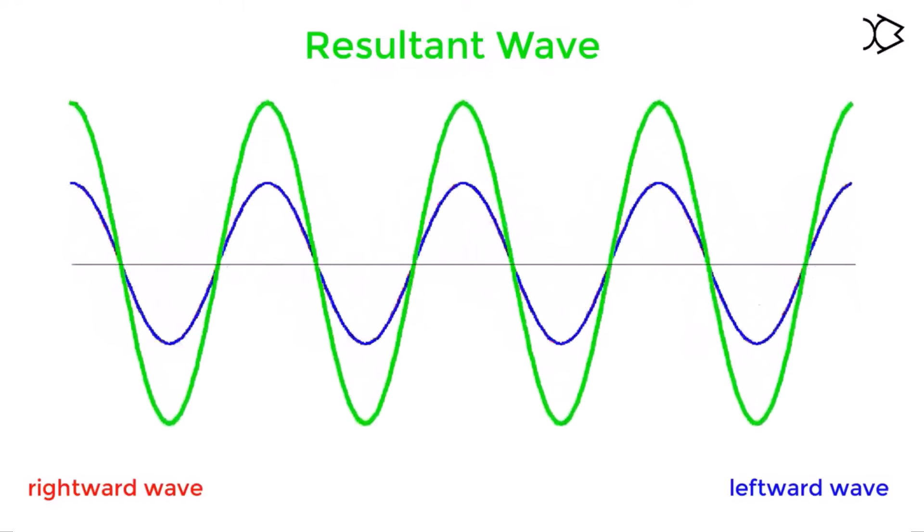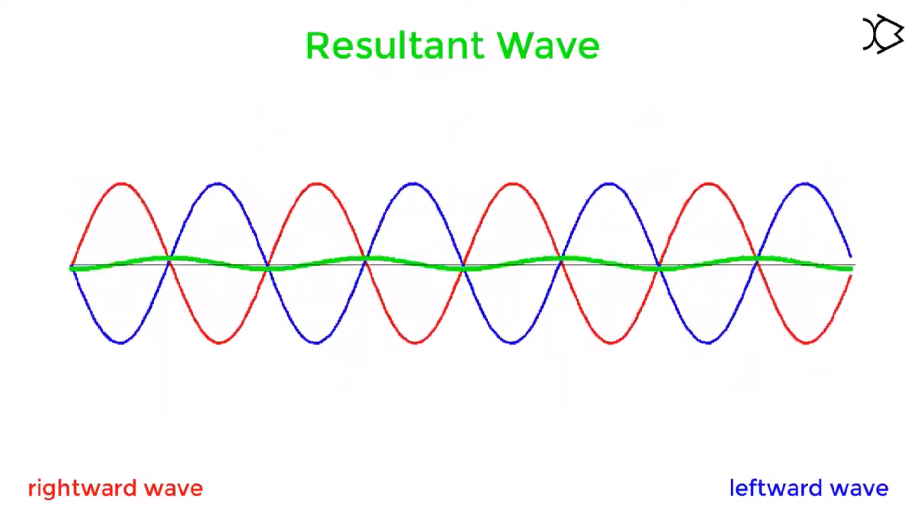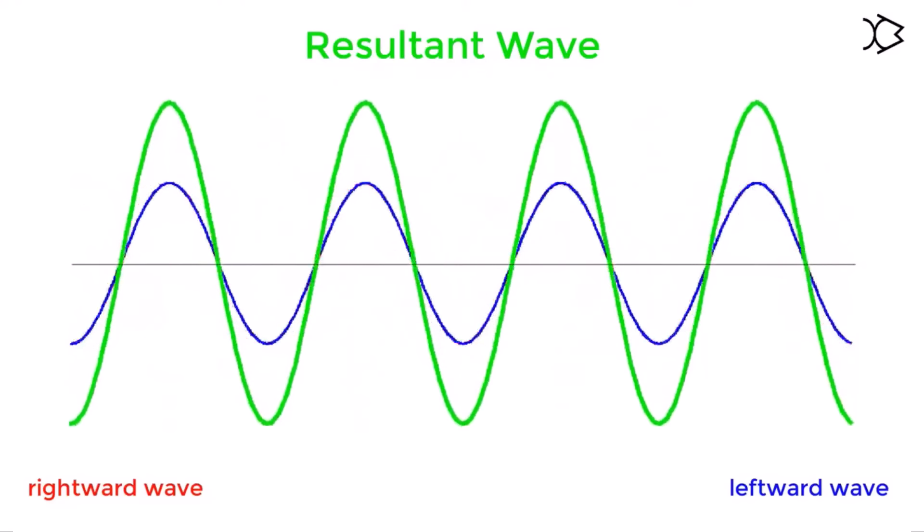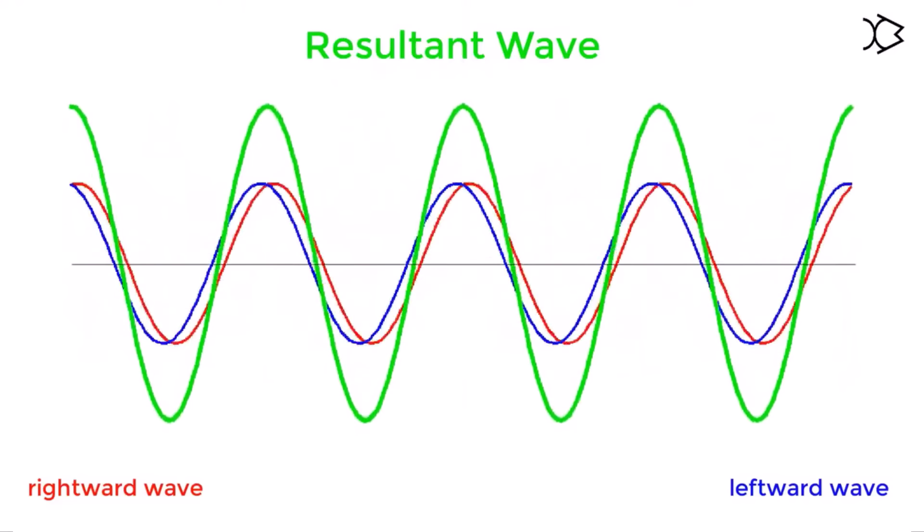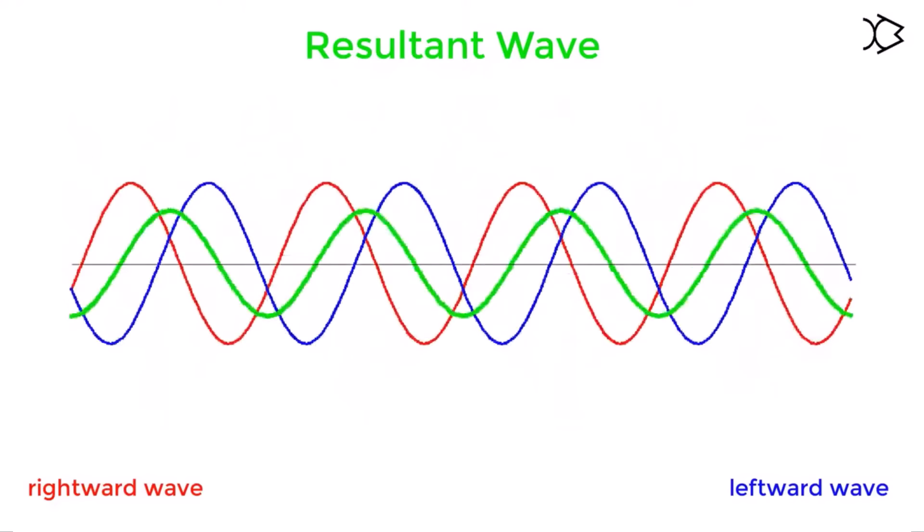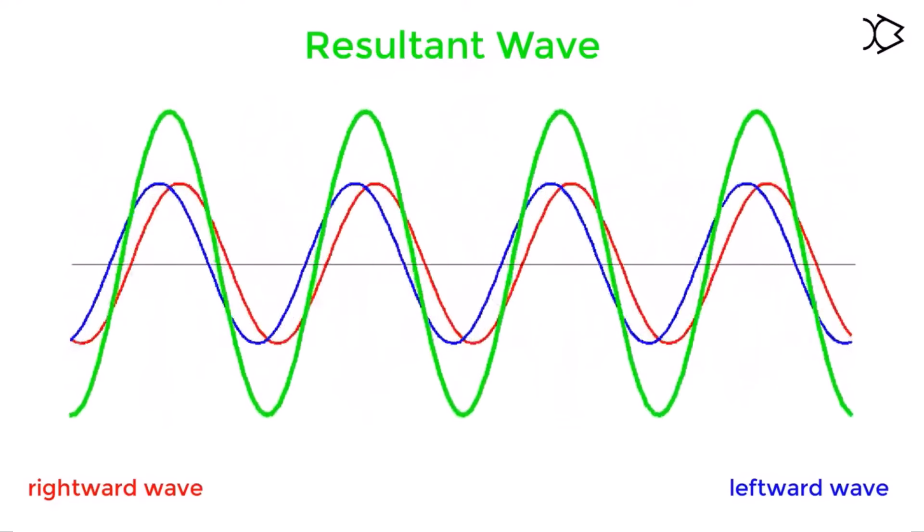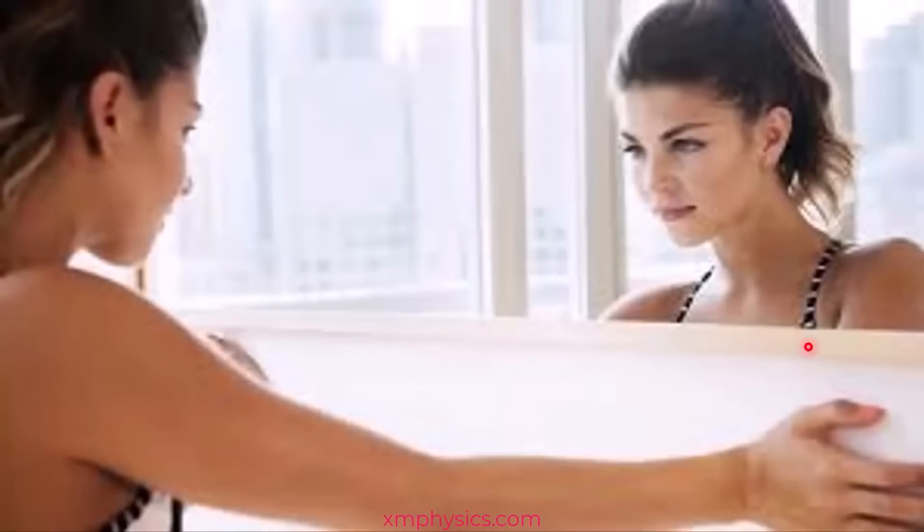Hello, in the last video we learned that when two identical waves traveling in opposite directions superpose, a standing wave is formed. But how often does a wave meet an identical wave? Same frequency, same wavelength, same amplitude? Very often actually.